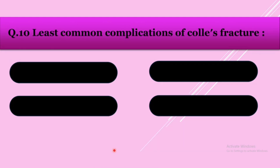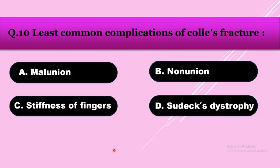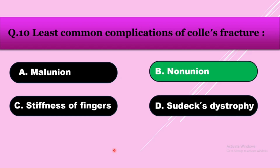Question number ten: Least common complication of Colles fracture — option A: malunion, option B: nonunion, option C: stiffness of finger, option D: Sudeck's dystrophy. The answer is nonunion; it is the least common complication.